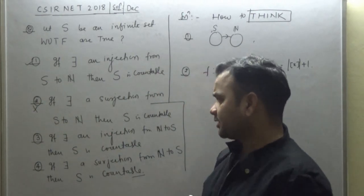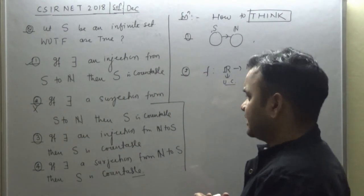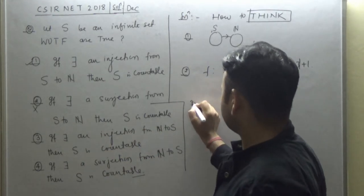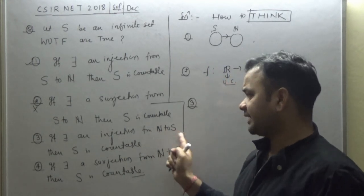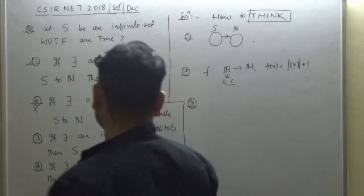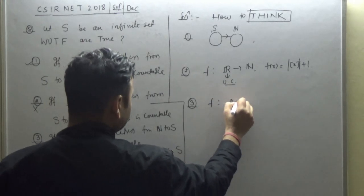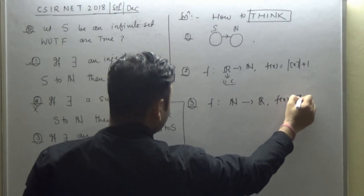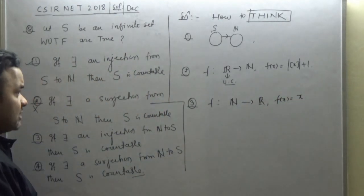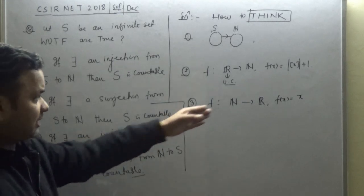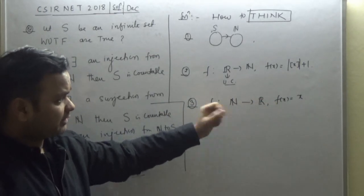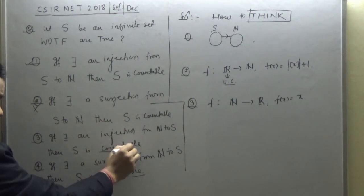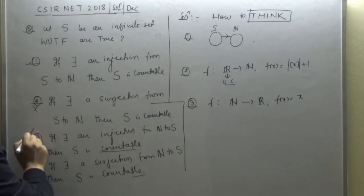Now let's come to the third option. If there exists an injection from N to S, then S is countable. It's not necessary again. Take natural number to R. You can give that function f(x) equals x. This is one-one, so natural to S you have a one-one function, but R is uncountable, so S is uncountable. So you are claiming that S is countable is the wrong statement.